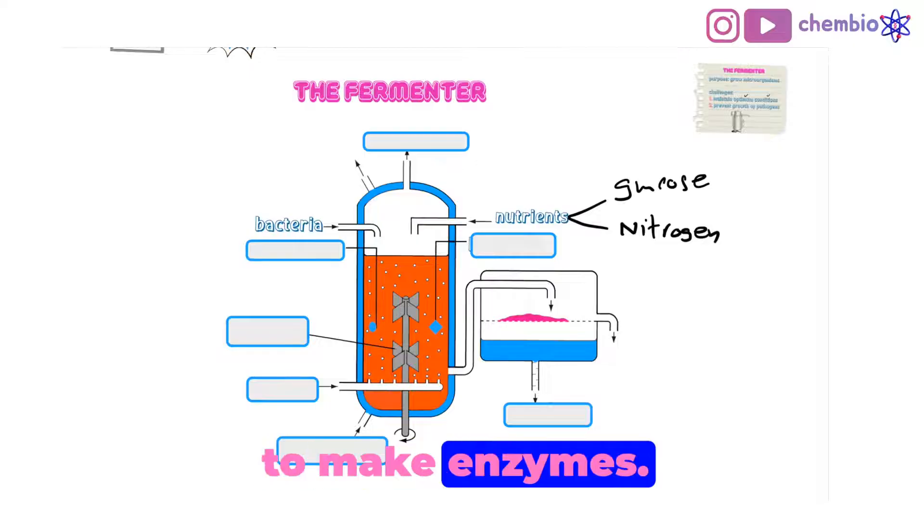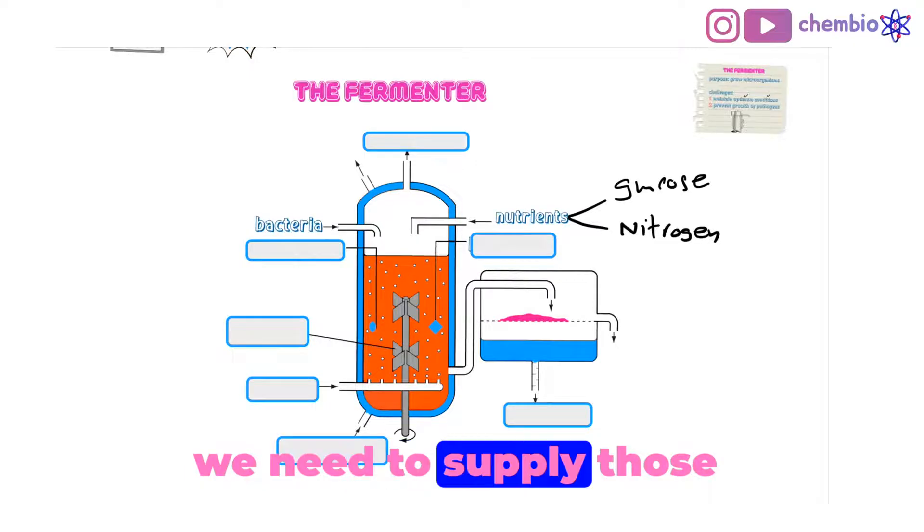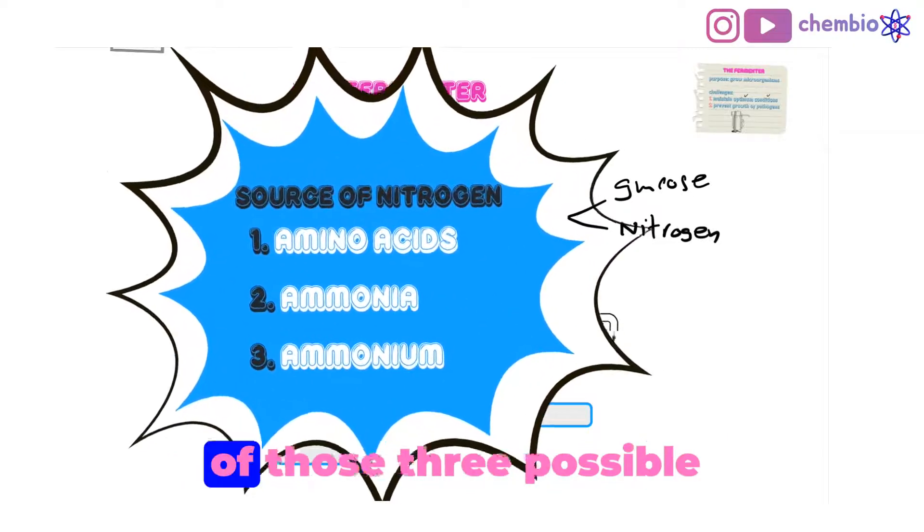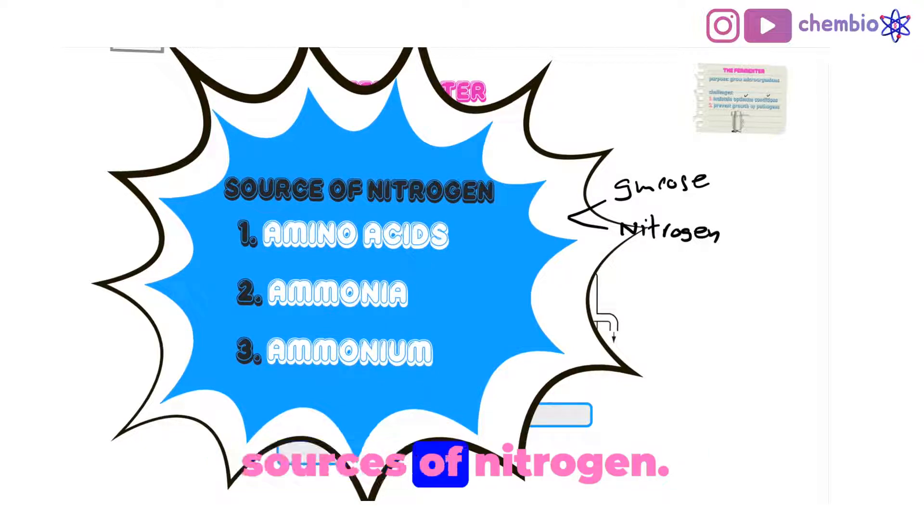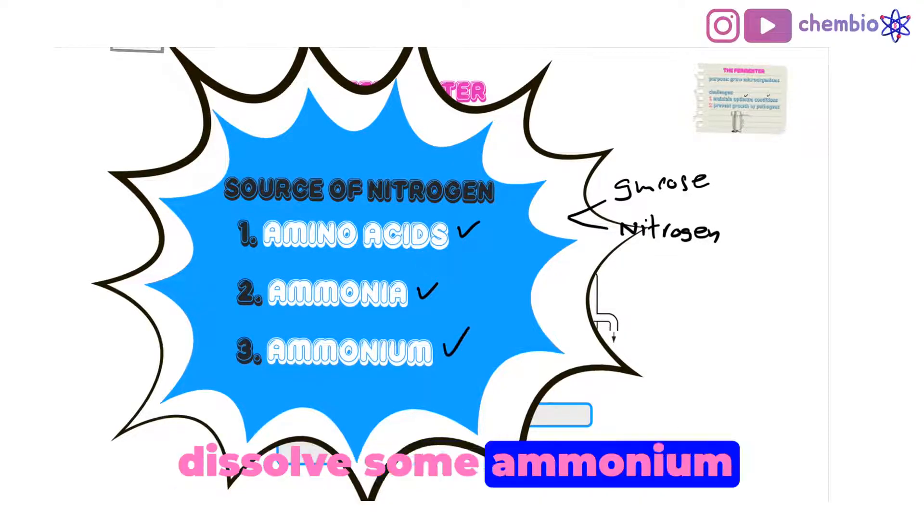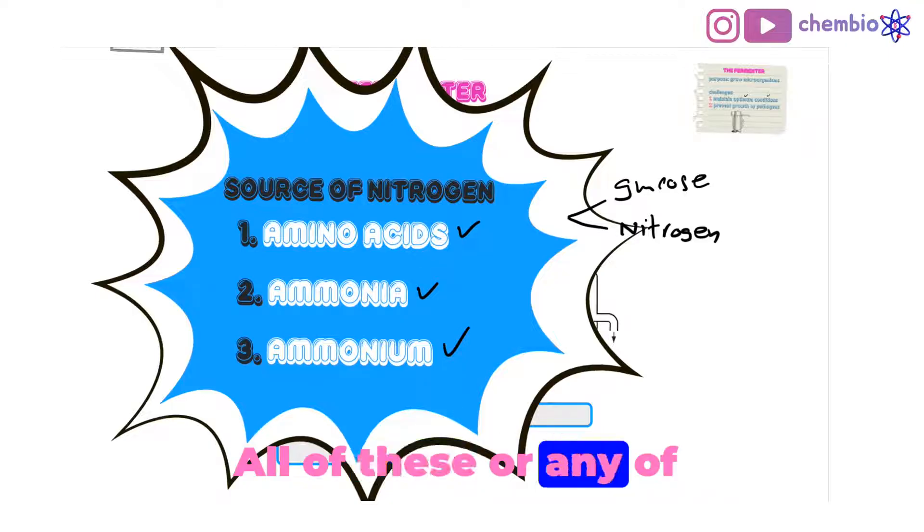They're very important to make enzymes. So for that reason, we need to supply those microorganisms with one of these three possible sources of nitrogen. One is amino acids, the building blocks of protein. Ammonia is a gas we could bubble in the fermenter, or we could dissolve some ammonium salts. Any of these would do as a source of nitrogen.